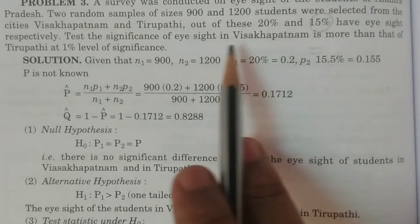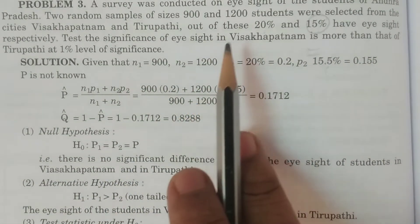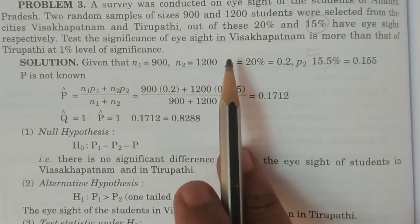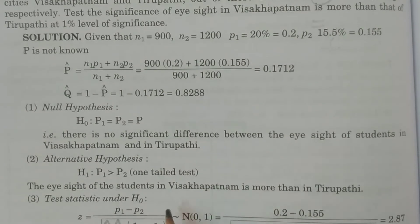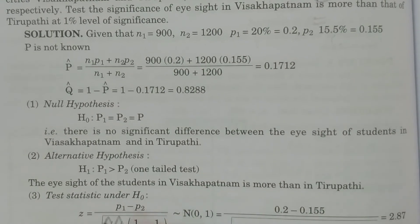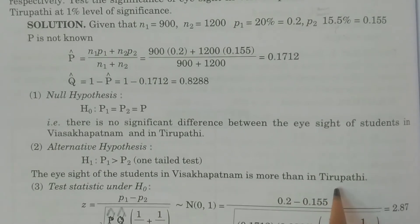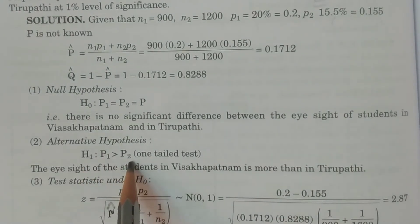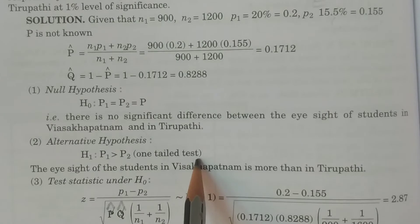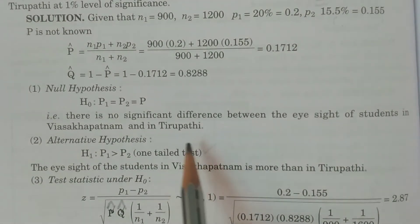The alternative hypothesis H1 is: the eyesight of the students in Visakhapatnam is more than that of Tirupati. That is, Capital P1 greater than Capital P2. This makes it a one-tail test.